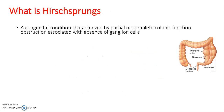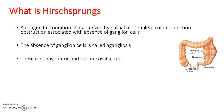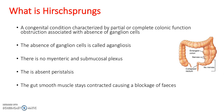So what is Hirschsprung's? It's a congenital condition characterised by partial or complete colonic function obstruction associated with absence of ganglion cells. The absence of the ganglion cells is called agangliosis. There is no myenteric or submucosal plexuses and there is absent peristalsis. So the gut smooth muscle stays contracted, causing a blockage of the feces. As you can see here, this section has no nerves and so peristalsis doesn't happen — that means there's a blockage above it and the colon becomes enlarged.